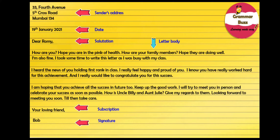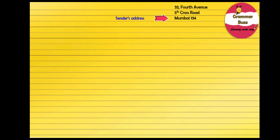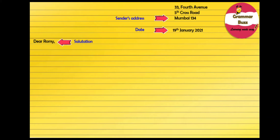Note that we have written the letter in the left-hand alignment pattern. Now let us read the same letter following the second format. We start with the sender's address on the right-hand side: 33 4th Avenue, 5th Cross Road, Mumbai 134. Then we leave a blank line followed by the date, 19th January 2021, on the right-hand side as well. After the date, we leave another line and write the salutation 'Dear Romy,' followed by a comma. Note that we write this on the left-hand side.